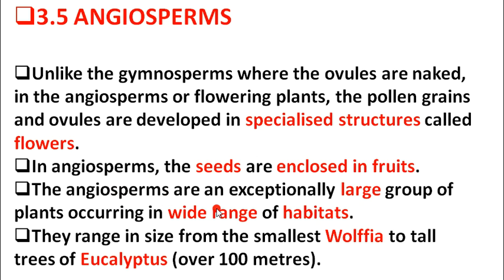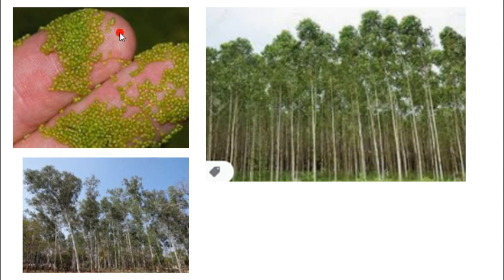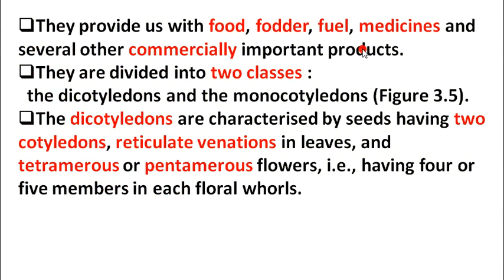Angiosperms are an exceptionally large group of plants occurring in a wide range of habitats — meaning their living area is very wide. They can range in size from the smallest, Wolfia (the smallest flowering plant), to the tallest tree, eucalyptus, which is over 100 meters in height. They provide us with food, fodder, fuel, medicines, and several other commercially important products.